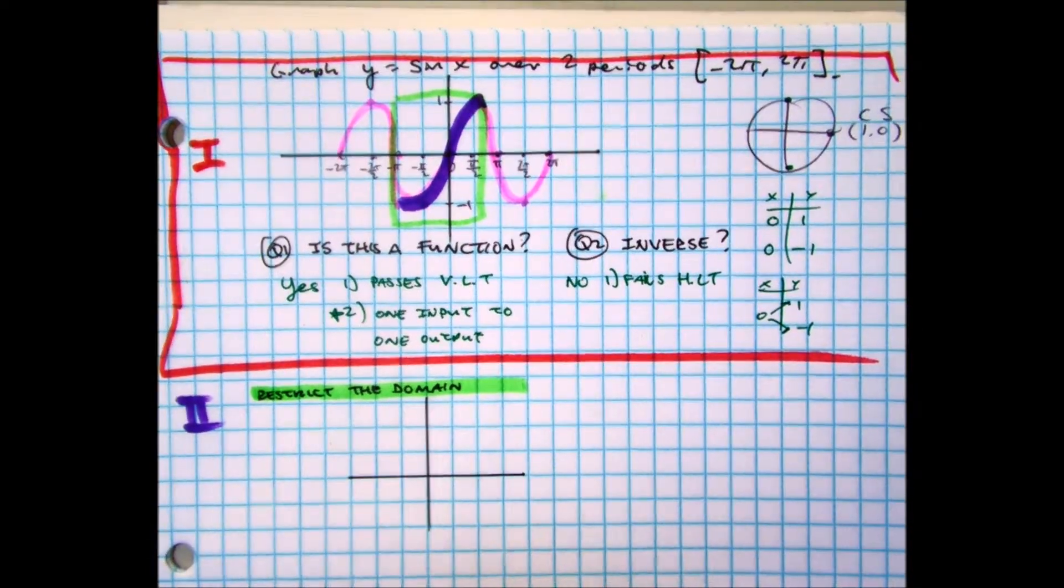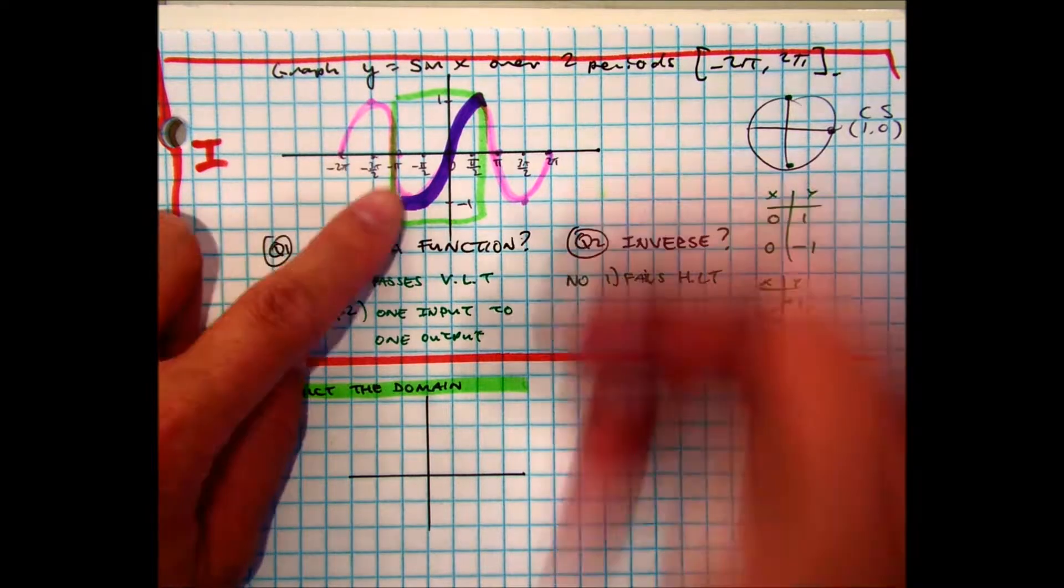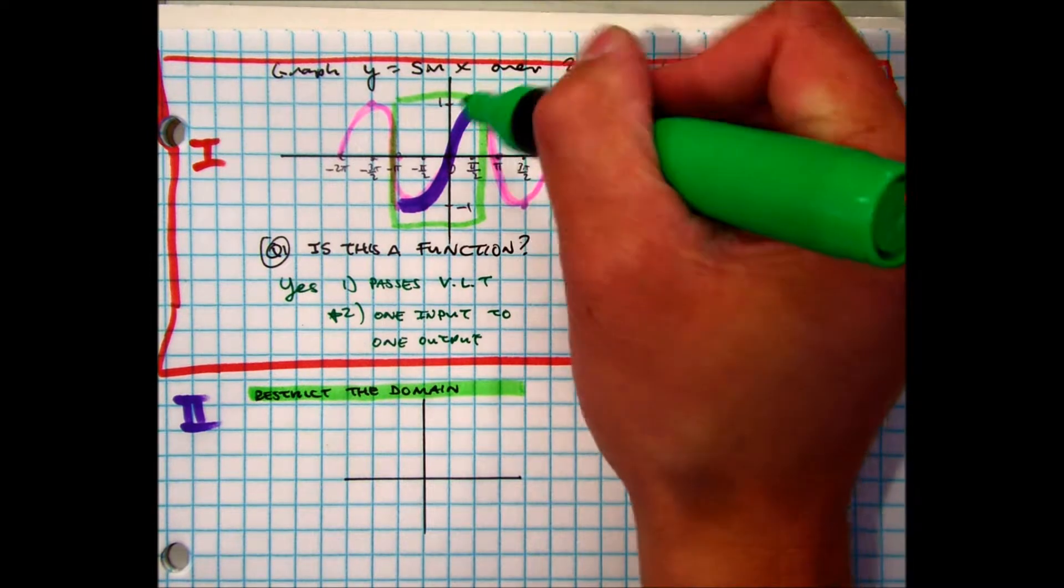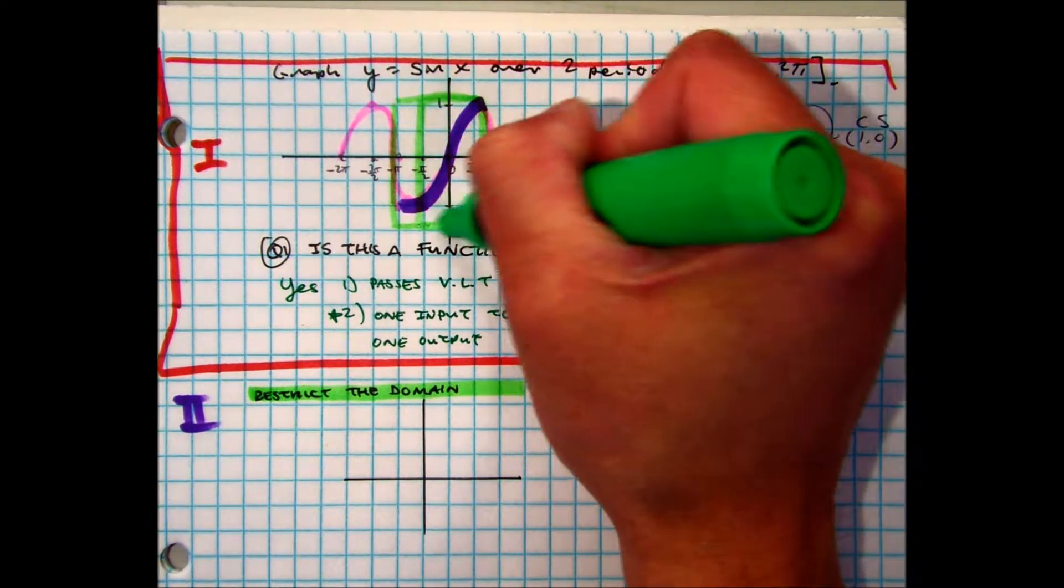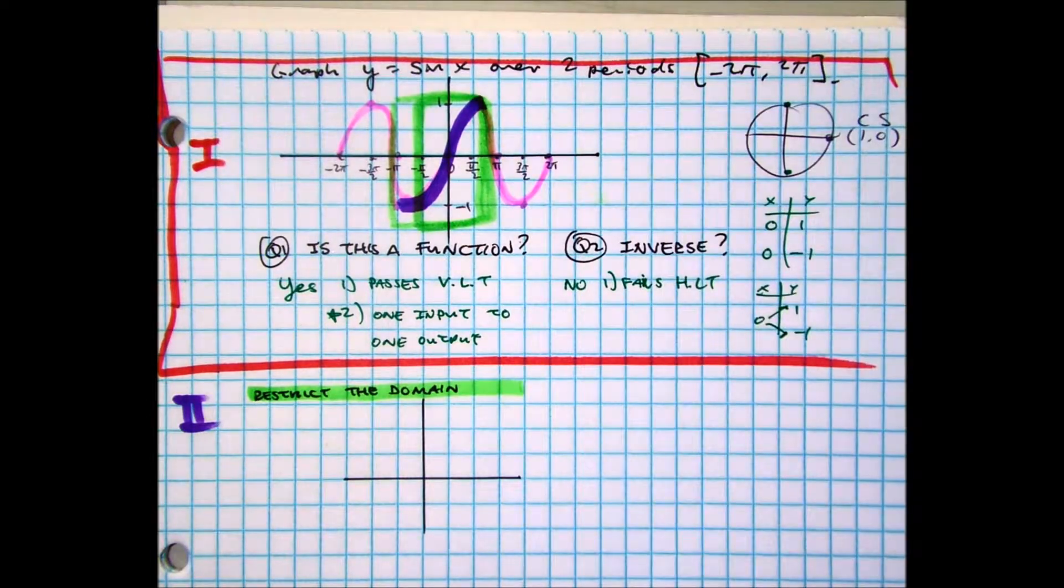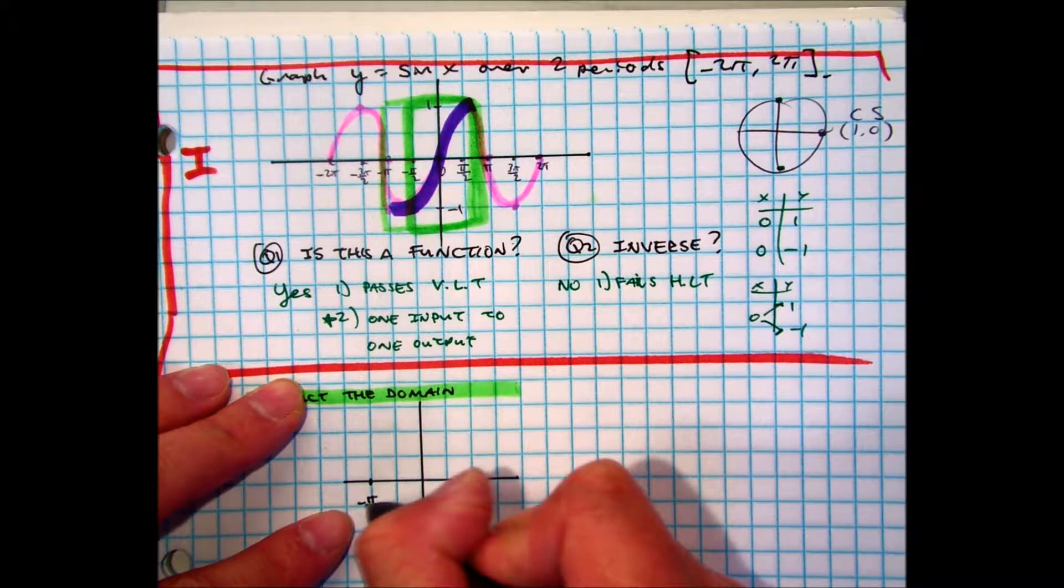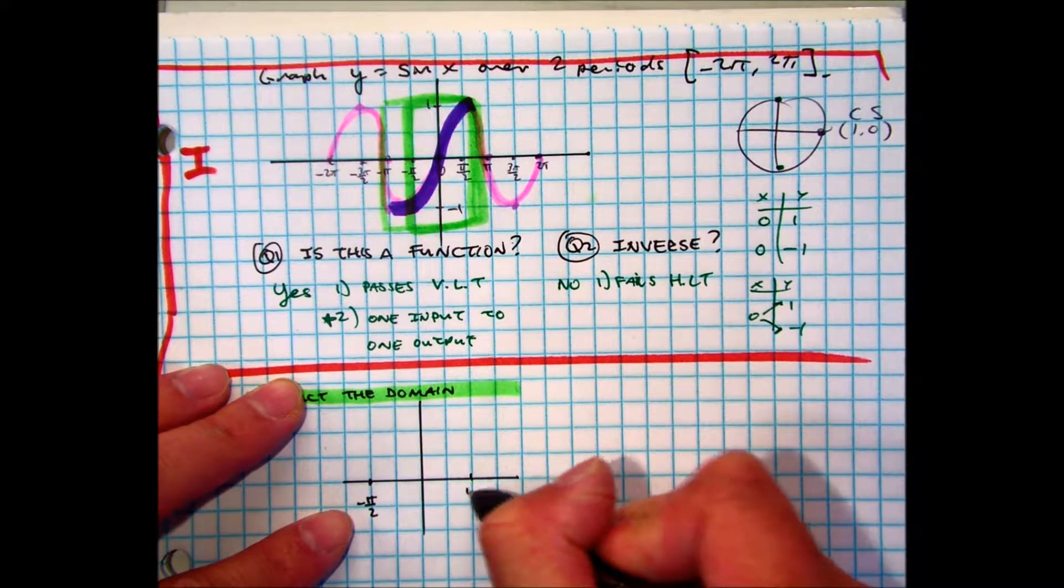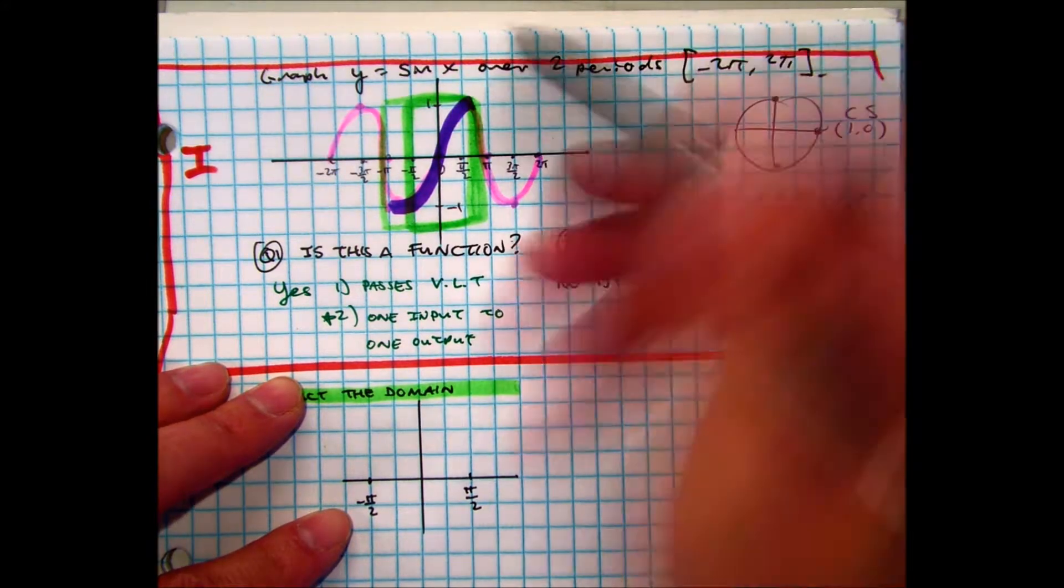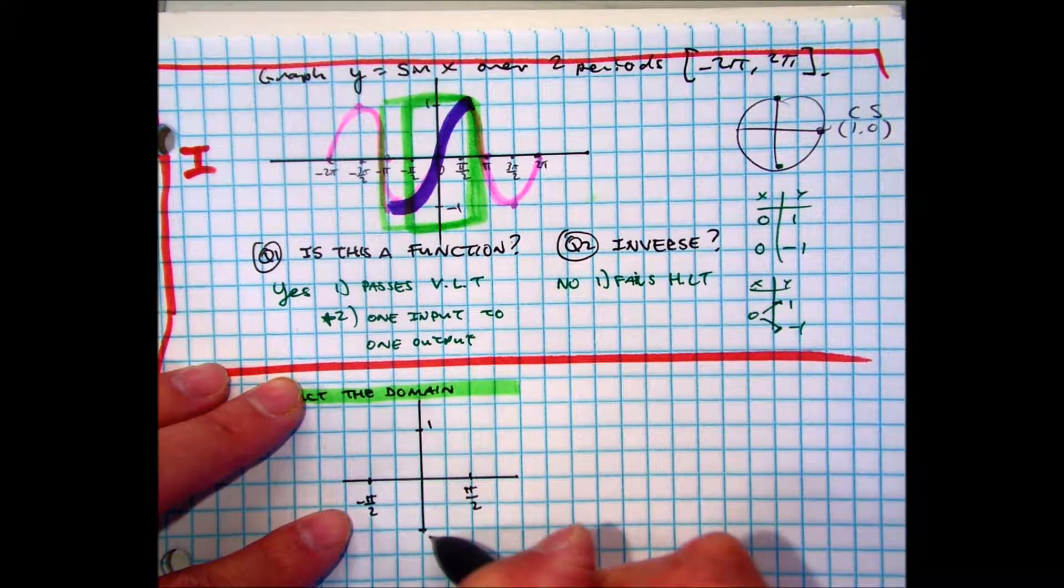Let's go ahead and draw that graph. Now, in this graph, all I need is... I messed up. It should have been negative pi over 2 to pi over 2. So, let's make it a little bit bigger. Negative pi over 2. Pi over 2. And my graph has a maximum of 1 and a minimum of negative 1.